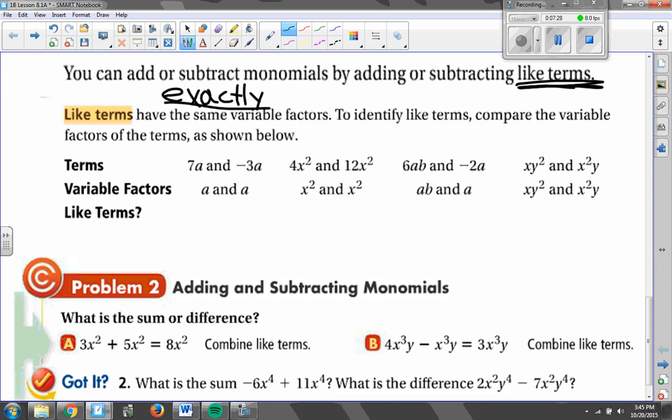The numbers don't matter, just the letters. For example, 7a and negative 3a. Even though they have different numbers, the letter portion, or the variable factors, is just a and a. So are they like terms? Well, a and a are exactly the same, so the answer is yes.